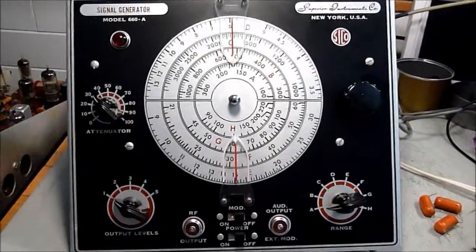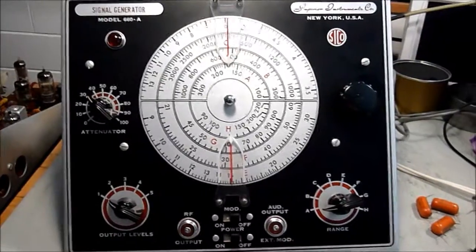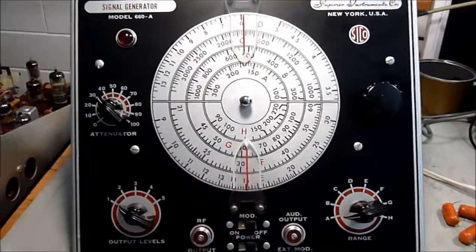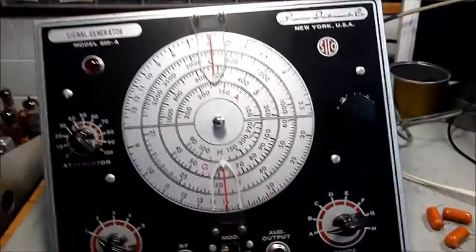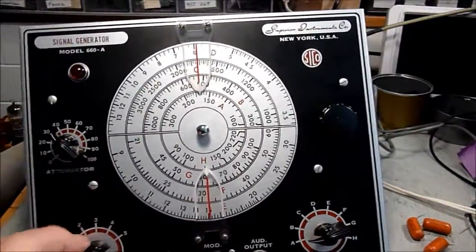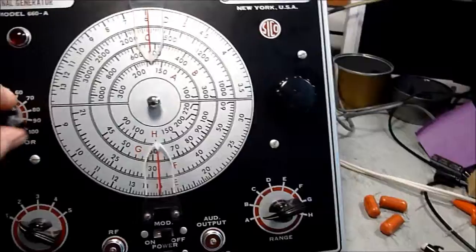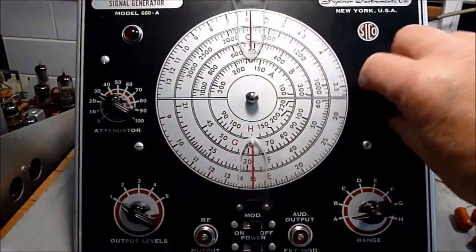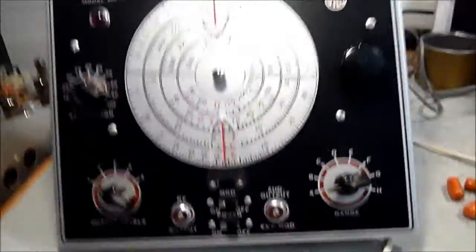We have a Superior Instruments signal generator model 660. This thing is in pretty good shape. At least the front is in pretty good shape, dials turn pretty smoothly, and we're hoping to go ahead and restore it. Let's take a look at the back.